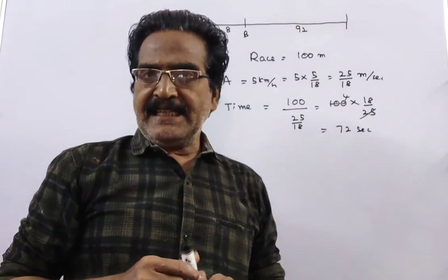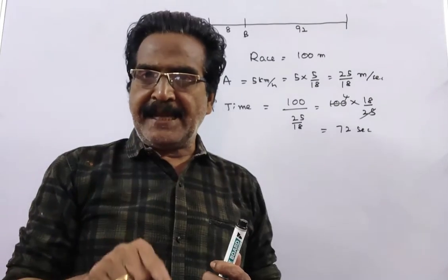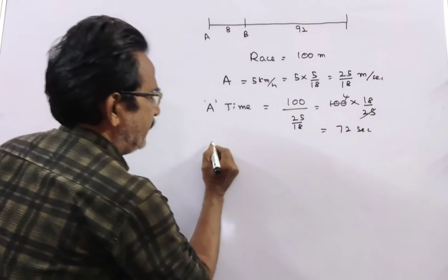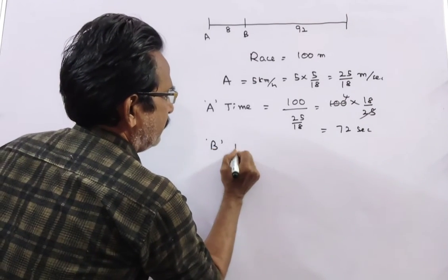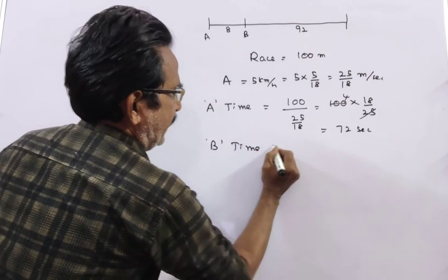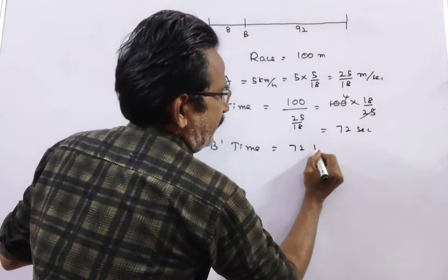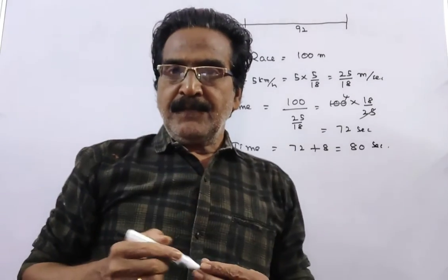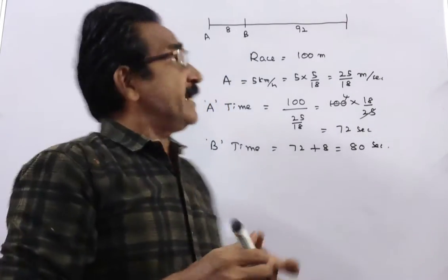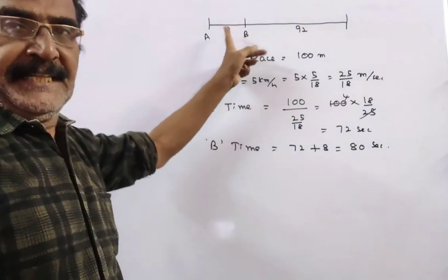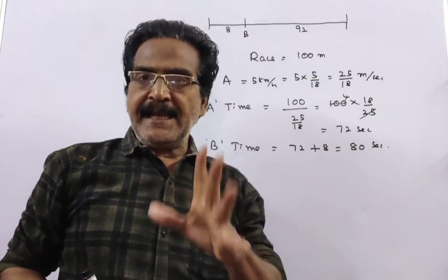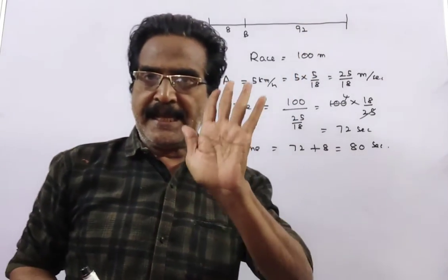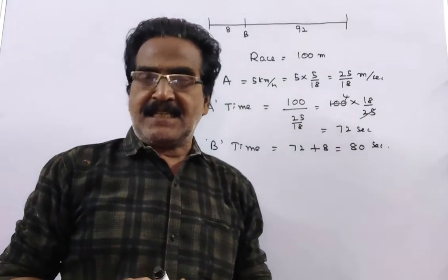It is given that A beats B by 8 seconds. That means B's time to finish the race is equal to 72 plus 8, 80 seconds. Moreover, A gives B a start of 8 meters. So then B needs to travel only 92 meters in the race.